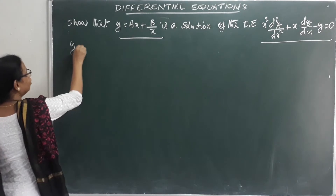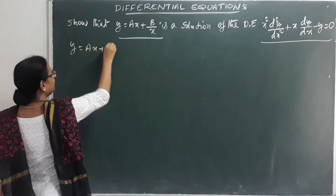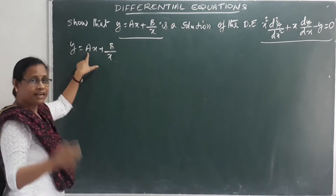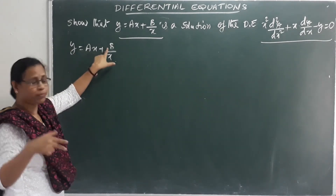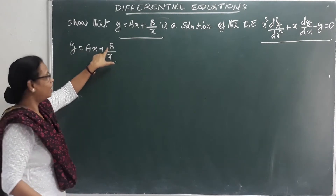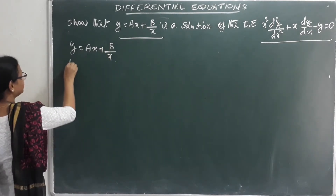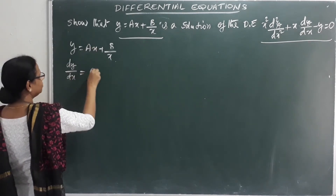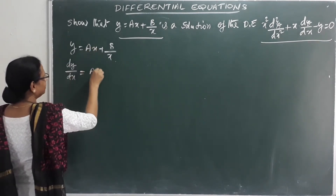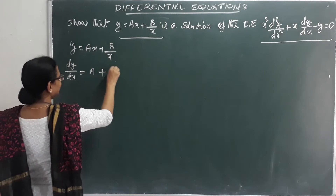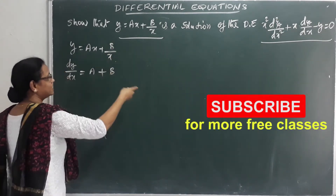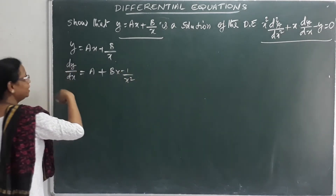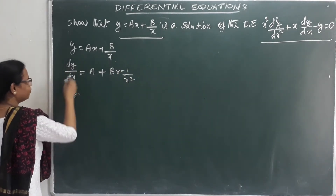y = ax + b/x is the solution. There are two arbitrary constants in this solution, so we will differentiate twice. Differentiating: dy/dx = a·1 + b · (−1/x²), that is, a − b/x².